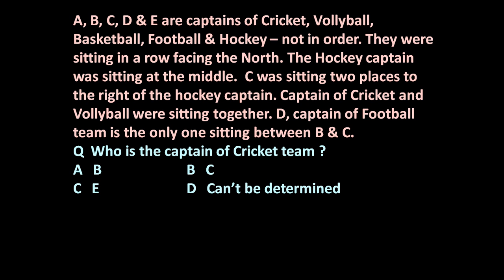The given problem is: A, B, C, D and E are captains of cricket, volleyball, basketball, football and hockey — not in order. They are sitting in a row facing the north. The hockey captain was sitting at the middle. C was sitting two places to the right of the hockey captain. The captains of cricket and volleyball were sitting together. D, captain of the football team, is the only one sitting between B and C. Based on this information, you have to answer: who is the captain of the cricket team — B, C, E, or cannot be determined?